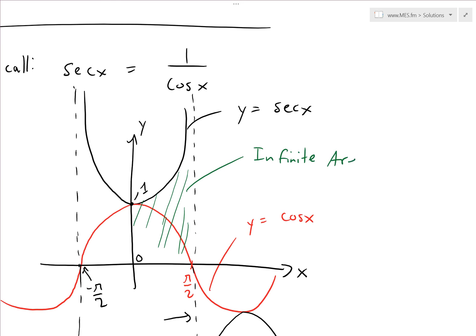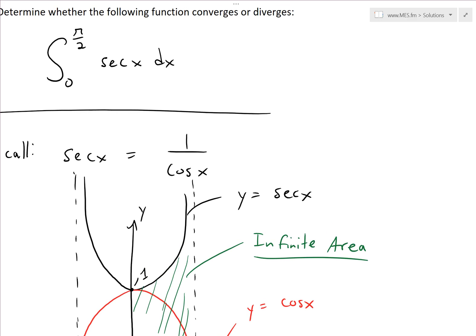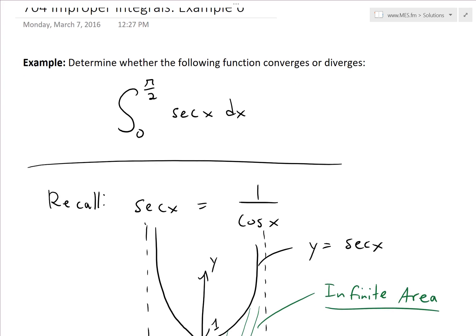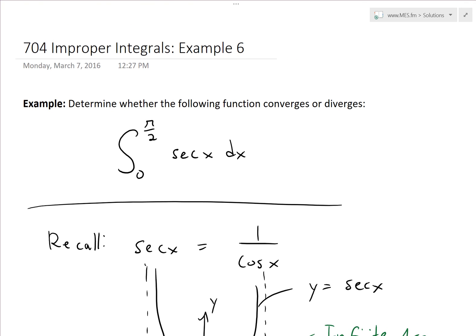So it's an infinite area underneath this curve. Anyway, that's all for today. Hope you learned from this useful example on improper integrals of a trigonometric function. As always, you can download these exact notes in the link below. Thanks for watching and stay tuned for another Math Easy Solution.